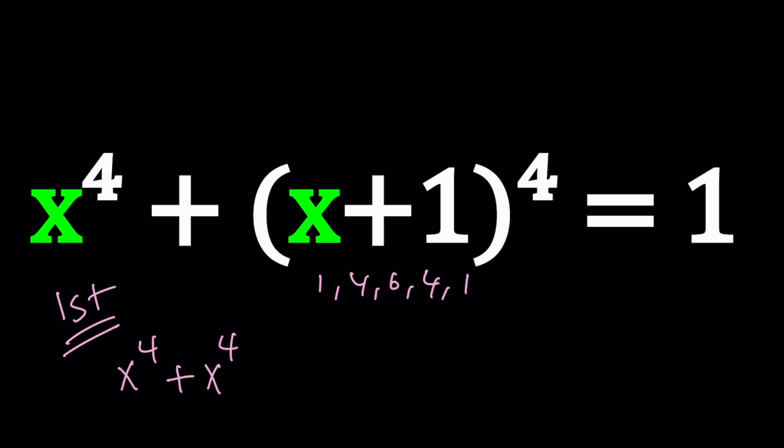In other words, the combinatorial coefficients. So we're going to get x to the fourth plus four x cubed plus six x squared plus four x plus one, and that's equal to one.